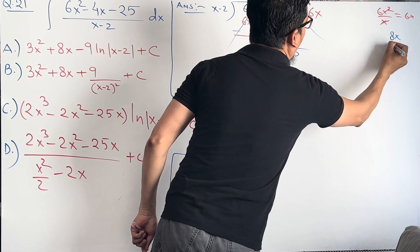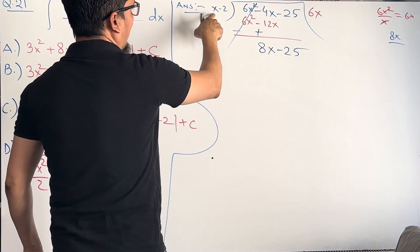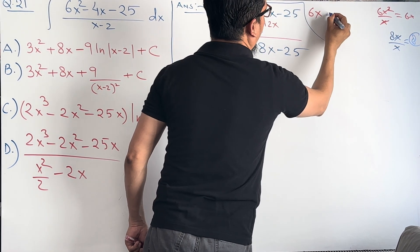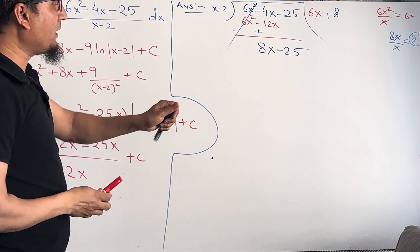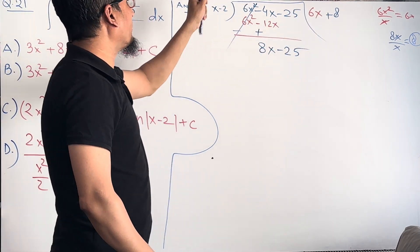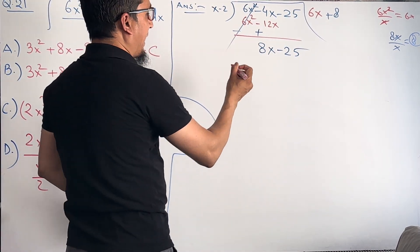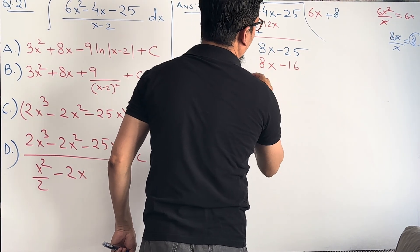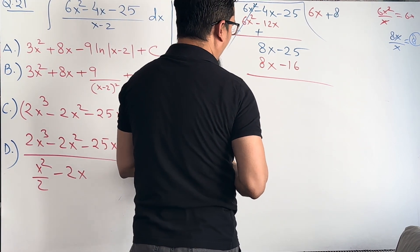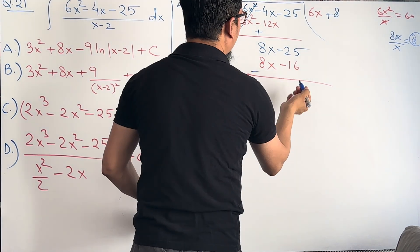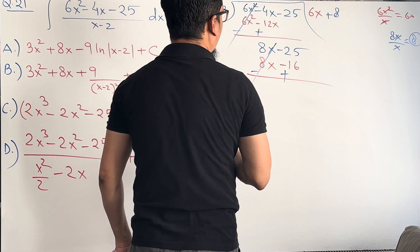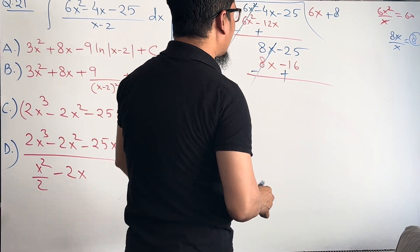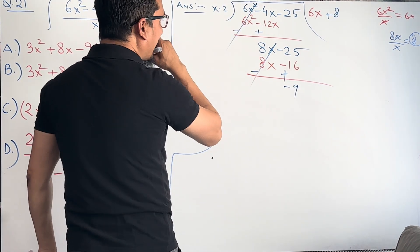Now divide 8x by x — x cancels — giving 8. Write down +8 as the second term of the quotient. Multiply 8 by (x - 2): 8 times x gives 8x, and 8 times -2 gives -16. Change the sign, so +16. The 8x terms cancel, and -25 + 16 gives -9. So the remainder is -9.